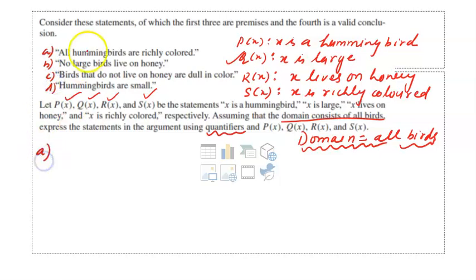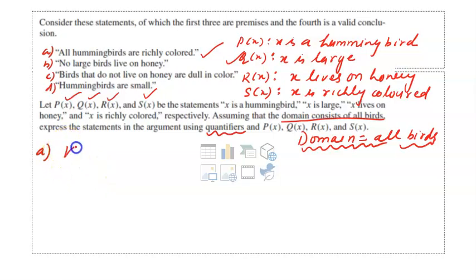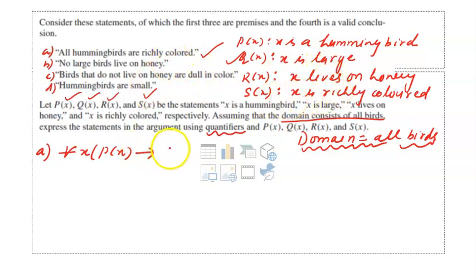Statement A is 'all hummingbirds are richly colored.' For all x, if px — x is a hummingbird — then sx — x is richly colored. So: for all x, px implies sx.